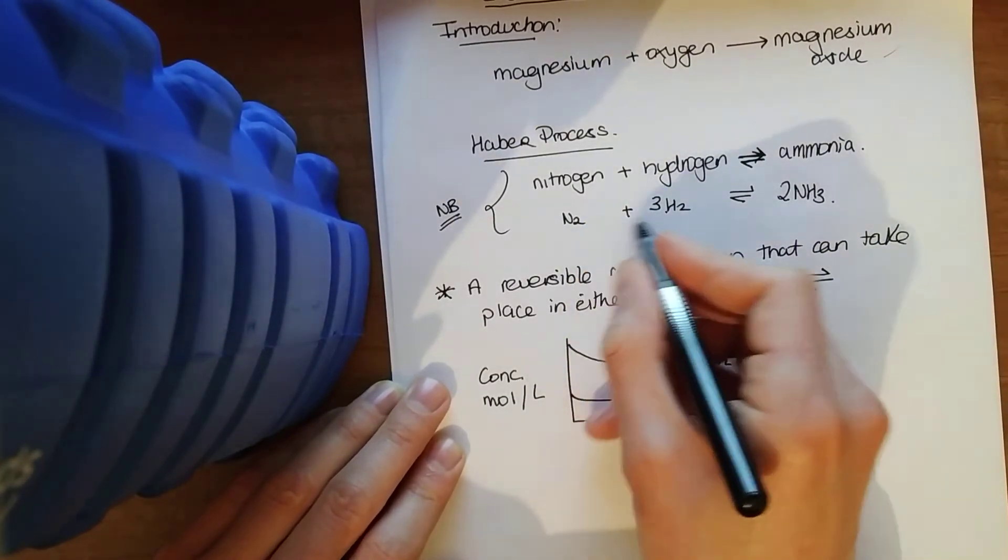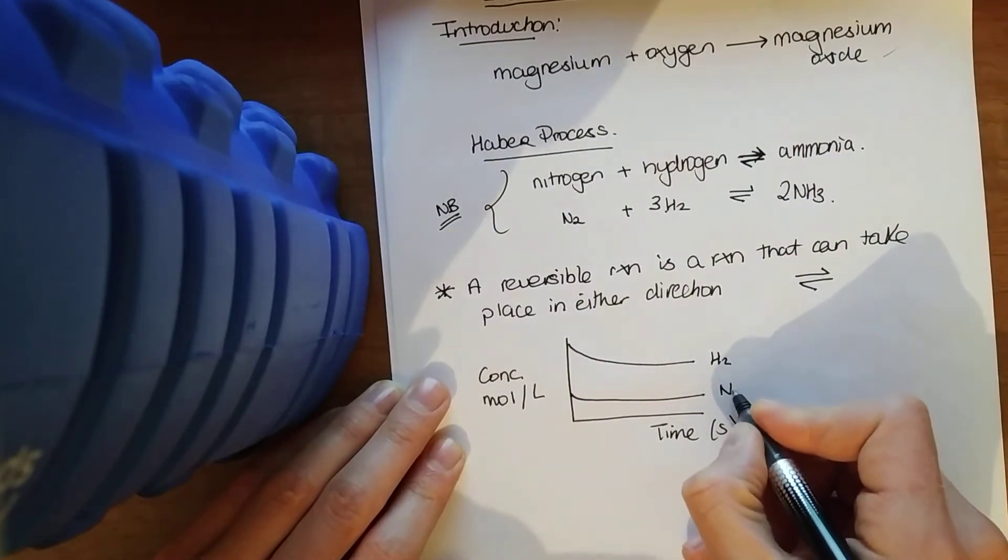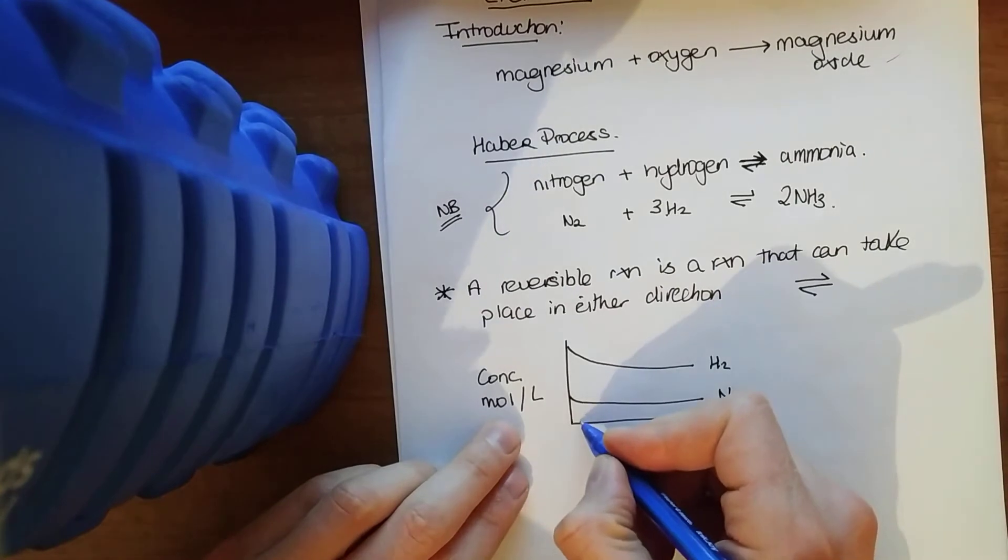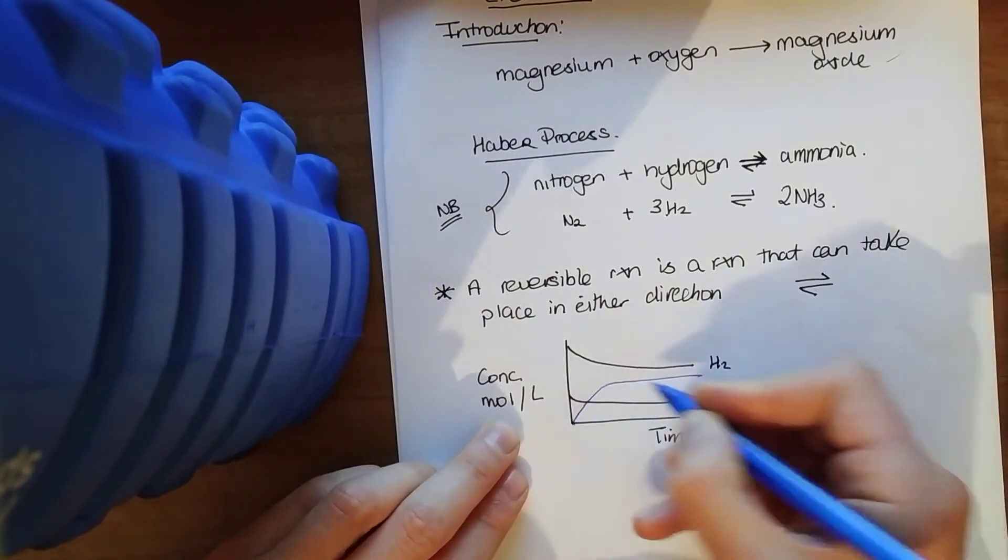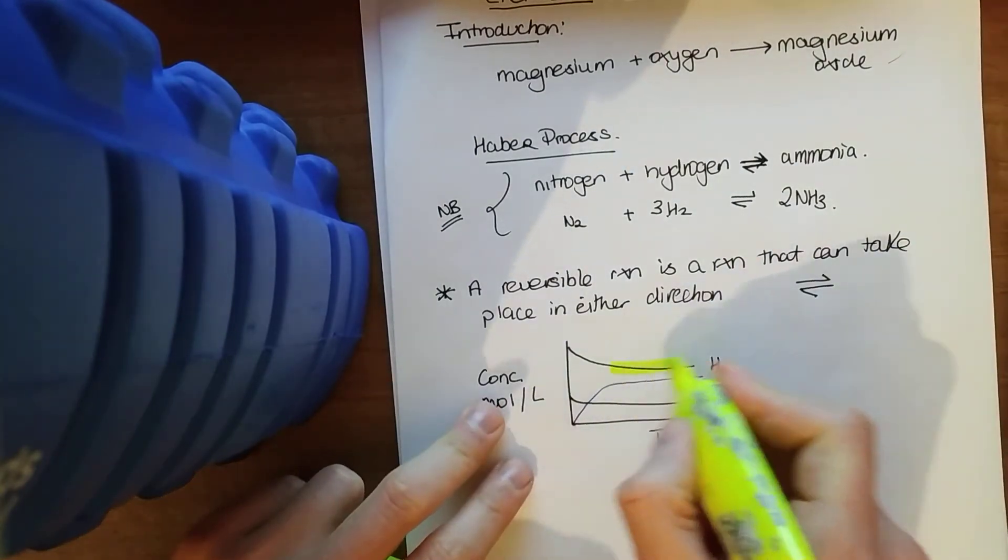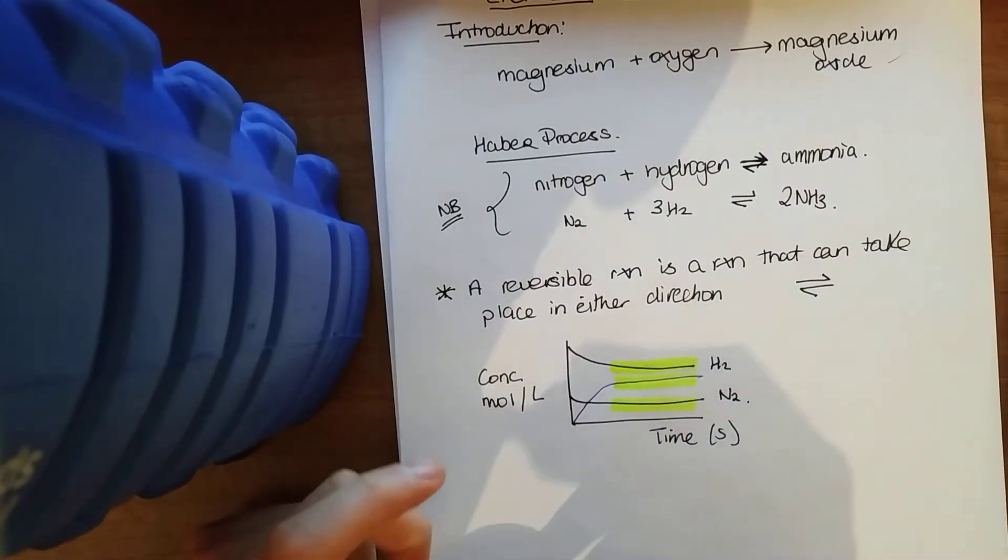And then what's going to happen to my concentration of my products? It's going to increase. Now once these lines start to flatten out, as we can see here, now I've reached equilibrium.